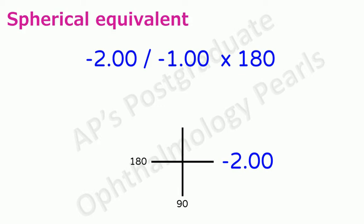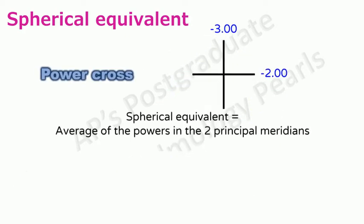Place the algebraic sum of the sphere and cylinder on the meridian that is 90 degrees away. So in this case the algebraic sum of the sphere that is minus 2 and the cylinder that is minus 1 is minus 3. We will place this on the 90 degree meridian. We have now made the power cross.